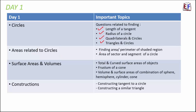For Areas Related to Circles, finding the area of a shaded region is the most popular problem — you must expect at least one such question. You may be given a complicated figure with a shaded portion and asked to find its area or perimeter. To solve these correctly, you must be thorough with how to find the area of a minor sector, major sector, minor segment, and major segment of a circle. This lesson requires practice — you cannot rely only on memorizing formulas.